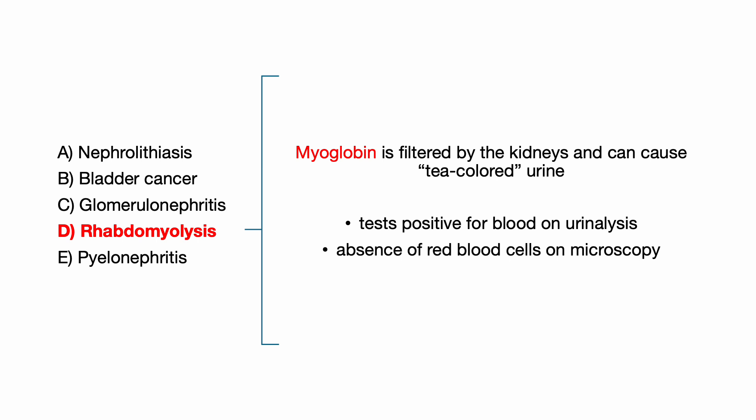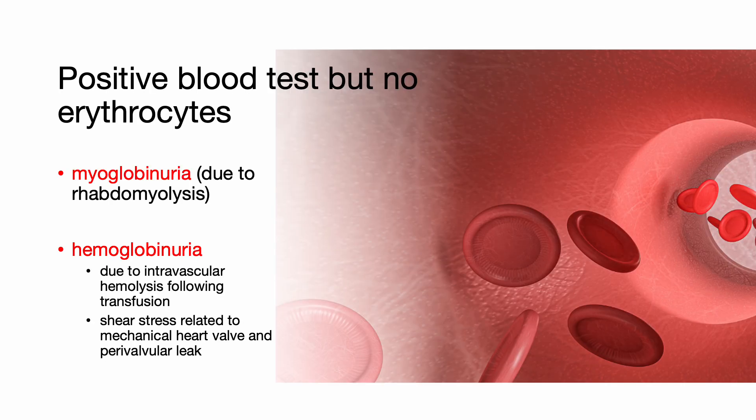The correct answer is D, rhabdomyolysis. Rhabdomyolysis, often caused by strenuous exercise, results in the release of muscle breakdown products such as myoglobin into the bloodstream. Myoglobin is filtered by the kidneys and can cause urine to test positive for blood on urinalysis despite the absence of red blood cells on microscopy. This is a key finding distinguishing rhabdomyolysis from other causes of hematuria. The markedly elevated CK level further supports this diagnosis. A positive test in the absence of erythrocytes in the urine sediment may also indicate hemoglobinuria due to intravascular hemolysis following transfusion or shear stress related to a mechanical heart valve or perivalvular leak.